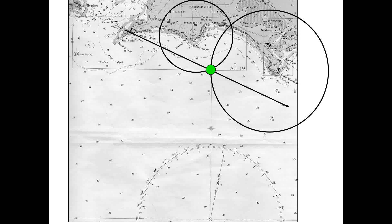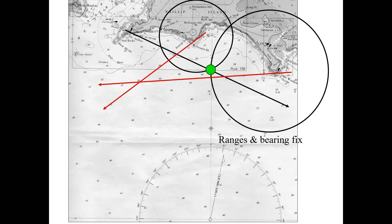The intersection of position circles and position lines gives you an accurate position of the ship. Another concept is the cocked hat. The cocked hat results when bearings do not intersect perfectly — this could be because the angle of cut is not good, the objects are not well located, or there are some errors in the bearings obtained. You get a cocked hat, which is the triangle formed after three position lines intersect each other.